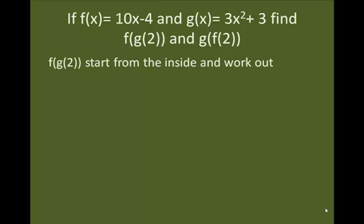Let's first look at f of g of 2. When we look at something that has a number in the innermost argument, we want to start from the inside and work out. So the innermost part of this is g of 2.